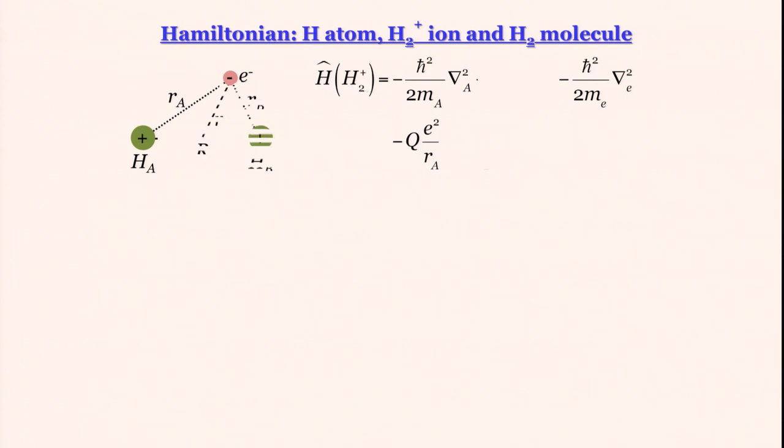To start with, let us add the nucleus HB. This here is the second hydrogen atom nucleus HB. How would the Hamiltonian get modified upon introduction of the second nucleus? Let us see what are the additional interactions that come in.